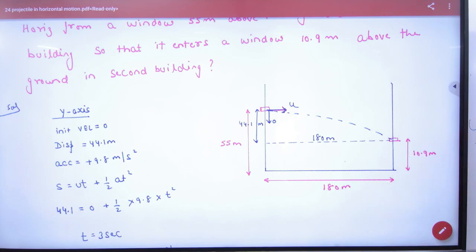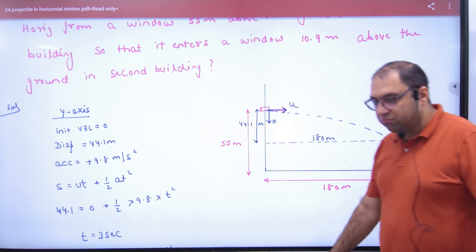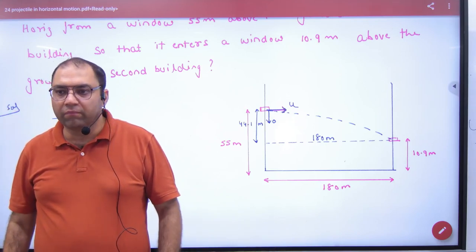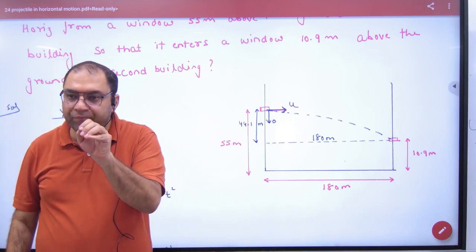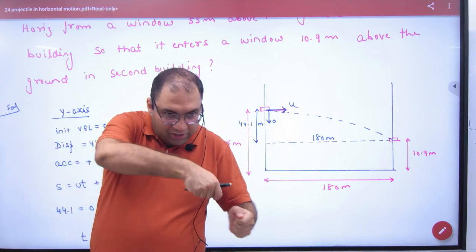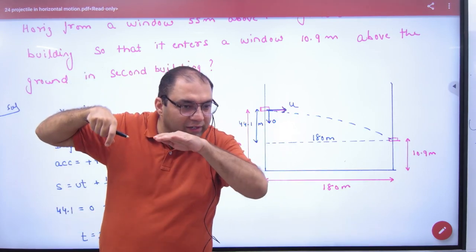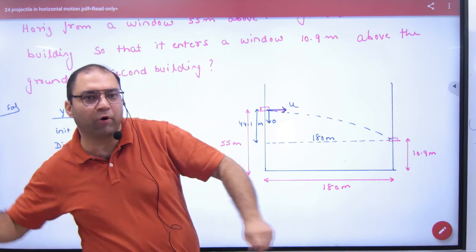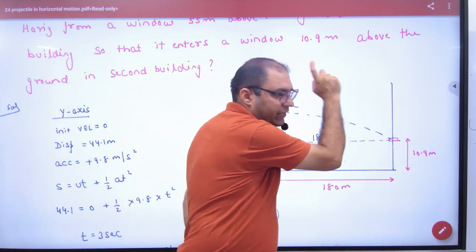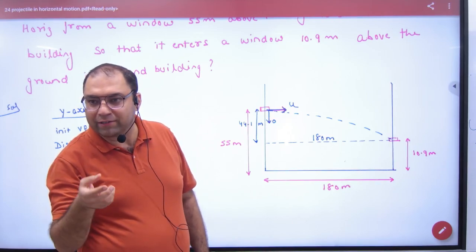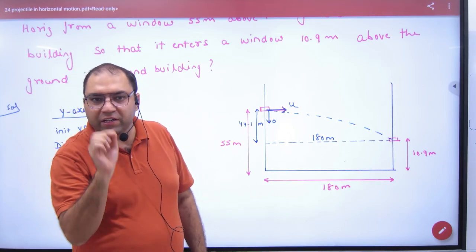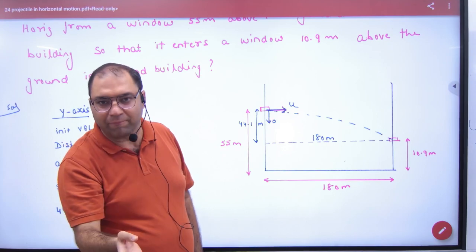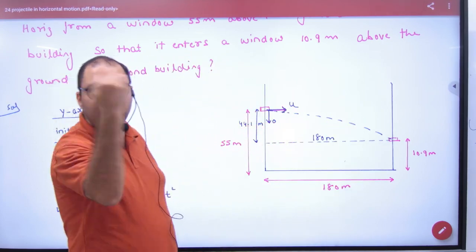A student asked: why not just hover the helicopter or move to the person's head and drop? Because the problem specifies horizontal projection — if thrown too fast, the ball overshoots the window; if too slow, it falls to the road. You must find the exact speed so the ball enters the window parabolically.